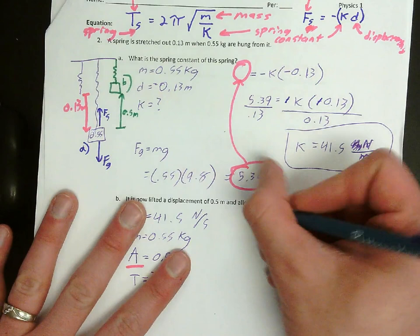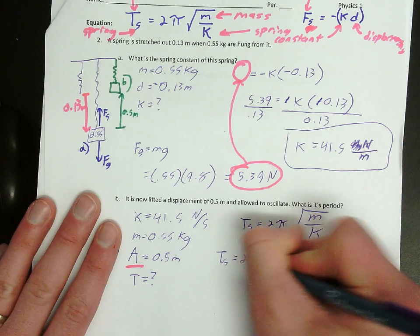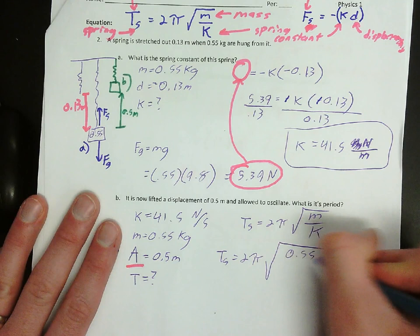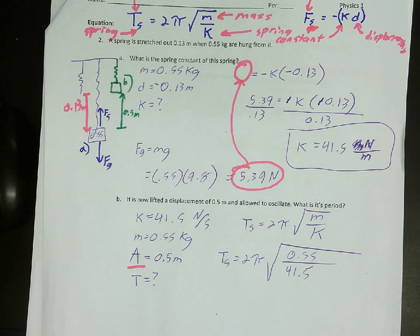So the equation I'm going to be using is this other one. Period of a spring is equal to 2π times the square root of m over k. So period of the spring is equal to 2π times m, which is 0.55, over k, which is 41.5. Notice, I didn't plug in my 0.5 anywhere. That's because I don't need amplitude. I don't care how much I stretch it out by. None of that matters. I put it there as a red herring. I want you to get used to thinking about what is it that you actually need and what do you not need. Okay? You do not need the amplitude for this.